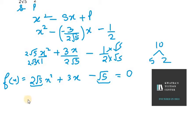5 minus 2 makes 3x. So it will be 2√5 x² + 5x - 2x - √5 = 0.